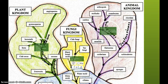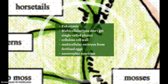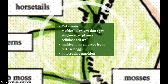Next we have the plant kingdom. Plants are eukaryotic and multicellular. They have a cell wall made of cellulose. They have multicellular embryos from fertilized eggs, which distinguishes them from fungi. They have autotrophic nutrition, specifically photosynthesis.